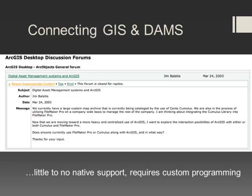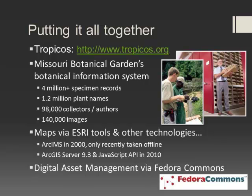Connecting GIS and digital asset management systems is a real challenge. I found an outdated forum post from 2003 where someone asked how to connect a large custom map archive in Contocumulus with ArcGIS — and there were no replies, the forum was closed, and the question hadn't been asked in the new forum. The answer is there is little to no native support for making these connections between systems; it requires custom programming. That was exactly the task I faced when integrating ArcGIS Server into a project at the Botanical Garden.